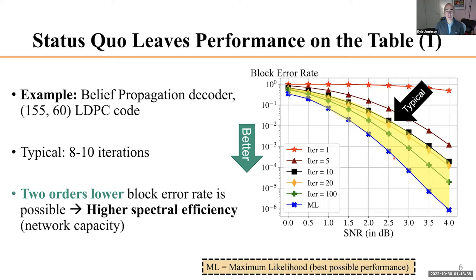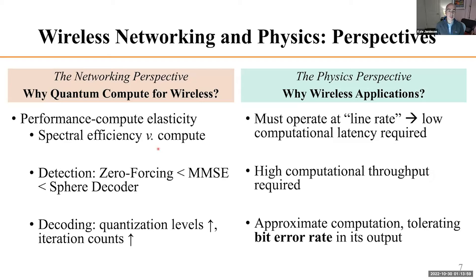Those two examples convey the takeaway that the status quo is leaving performance on the table. Were we to have more computation to throw at these problems, we could increase spectral efficiency and make these networks faster — something that really matters to wireless networks.